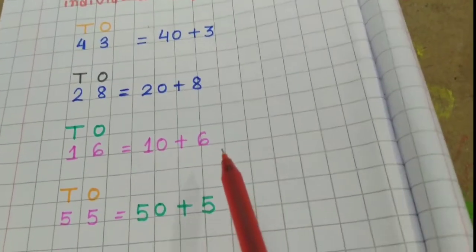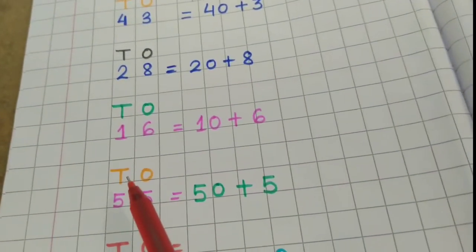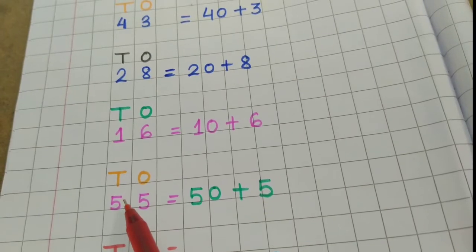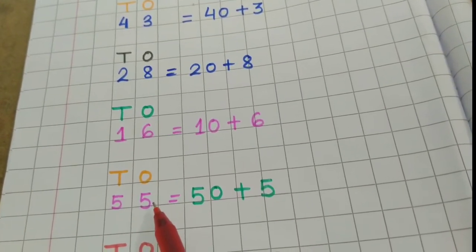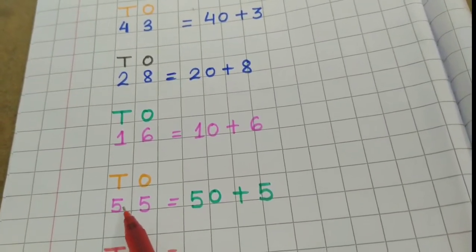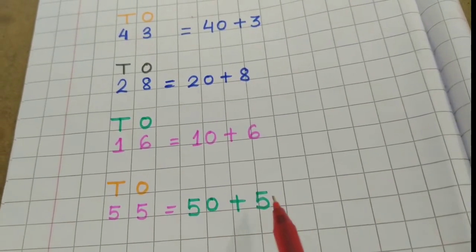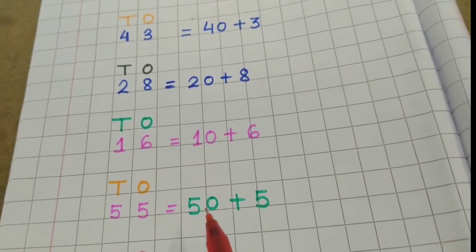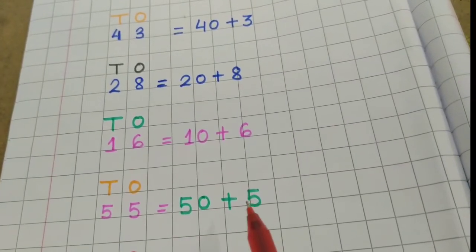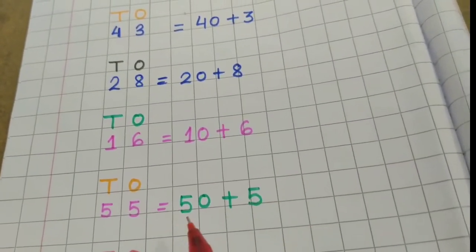5 tens means 50, 5 ones means 5. So, 50 plus 5, 55.